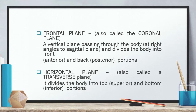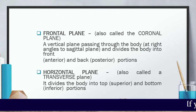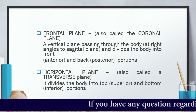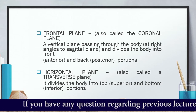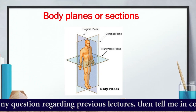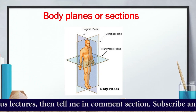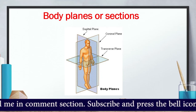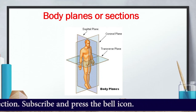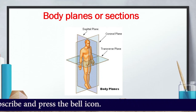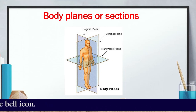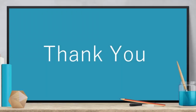The horizontal plane, also called the transverse plane, divides the body into top (superior) and bottom (inferior) portions. You can see all body planes and sections with the help of this figure — sagittal plane, coronal plane, and transverse plane are shown, while the oblique plane is not shown here. Thank you very much for your attention. Allah Hafiz.